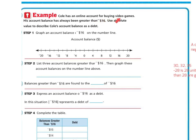Cole has an online account for buying video games. His account balance has always been greater than negative 16 dollars. Use the absolute value to describe Cole's account balance as a debt. So graph an account balance of negative 16 on the number line. Here's my number line. There's negative 16. So I'm going to graph it.